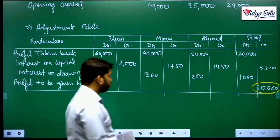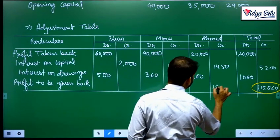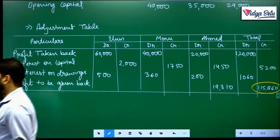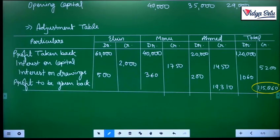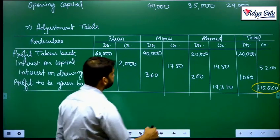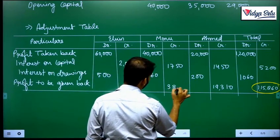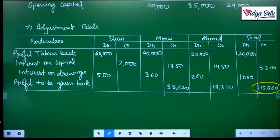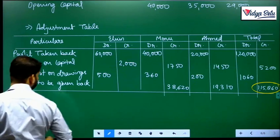19,310 times 2 is 38,620, and 19,310 times 3 is 57,930.